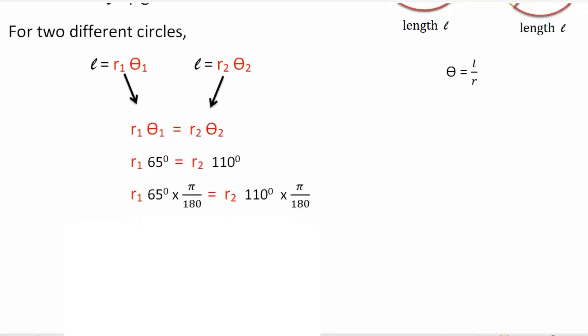For that, we multiply 65 times pi by 180 and 110 degrees times pi by 180. You can cancel this and what you get is 13 pi by 36. And here, the zeros get cancelled. What remains is 11 pi by 18.